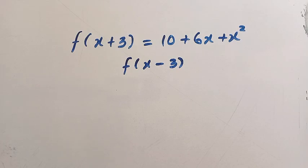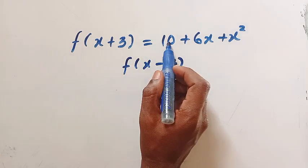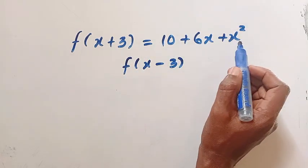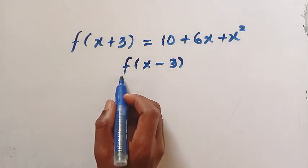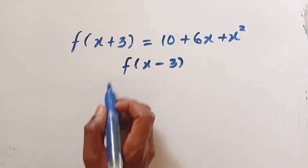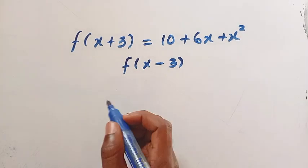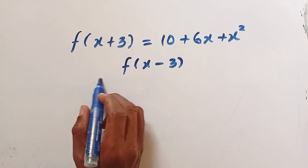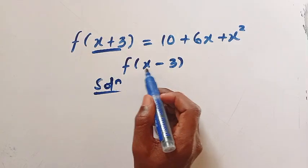Good day viewers, you are welcome here. We have an interesting functional equation: given that f(x+3) equals 10 plus 6x plus x squared, what is f(x-3)? Before I try this, you can drop the answer in the comment box. I'll apply two different methods to solve this, and if you have another method, please share it in the comment box. We have the domain here which is x plus 3, and we're interested to get the opposite, which is x minus 3.